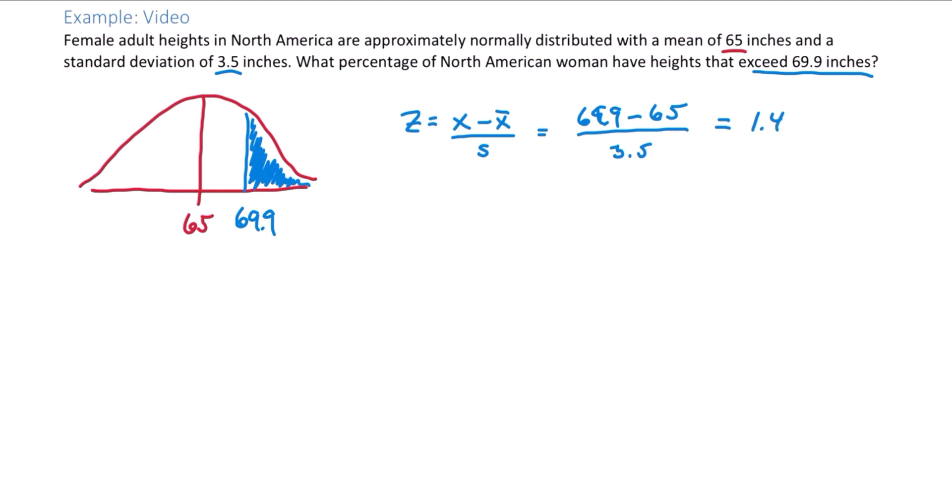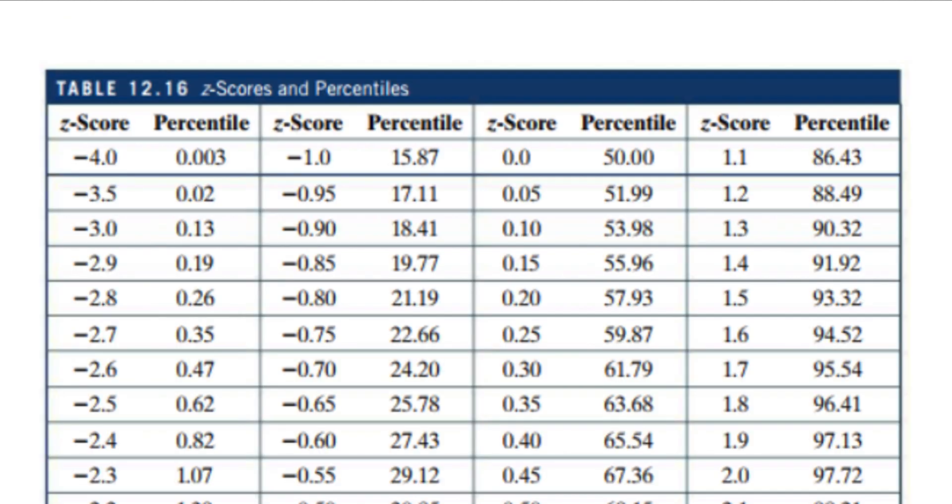So look in the table to find the z-score of 1.4. Looking in our z-score table, we can see that 1.4 corresponds to a percentage of 91.92. But keep in mind this table reads percent to the left of the z-score. So 91.92 corresponds to the percentage to the left of 1.4.